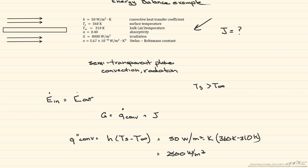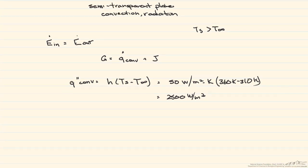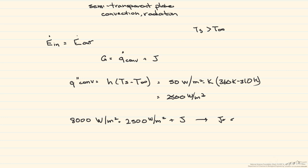Next, we look at the irradiation, which is given as 8,000 watts per meter squared. This equals Q_convection of 2,500 W/m² plus the radiosity. Therefore, the radiosity J is equal to 5,500 watts per meter squared.